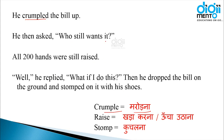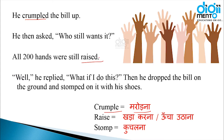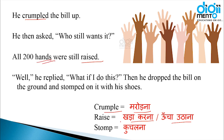And then asked — फिर उसने पूछा — 'Who still wants it?' — अब किसको अब भी यह चाहिए? All 200 hands were still raised — 200 के 200 हाथ फिर से खड़े हो गए। 'Raised' का मतलब है खड़ा करना या ऊँचा उठाना। Well, he replied, 'What if I do this?' — उसने कहा — अगर क्या हो अगर मैं ये करूँ?